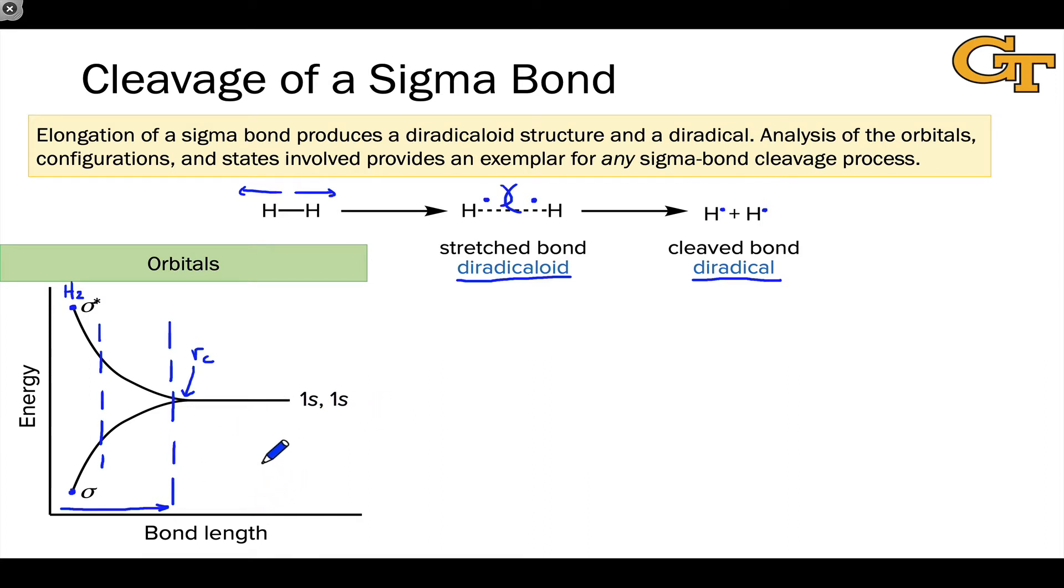As we move farther out to the right, these interact less and less and less. And way out here, we are absolutely at a diradical structure with independently acting electrons on two hydrogen atoms now separated far in space. I'll make the point now that this evolution of the orbital energies is really an exemplar for any sigma bond cleavage process. Br-Br, Cl-Cl, carbon iodine, any photochemically induced bond cleavage process has an evolution of orbital energies that looks like this. So it's a general picture that is very much worth keeping in mind.